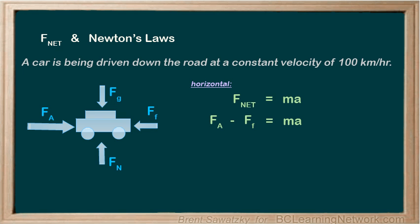The bigger your F_NET, that is, the bigger the difference between FA and FF, the more you'd accelerate, the faster you would get to 100 kilometers per hour. If you were being more environmentally friendly and wanted to burn less gas, you would accelerate more gradually and make FA just a little bigger than FF. The F_NET would be fairly small. But as long as there was a difference, you would have acceleration, and you'd eventually get up to 100 kilometers per hour.